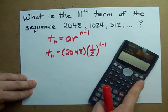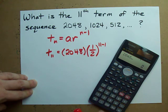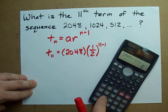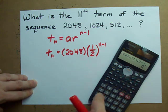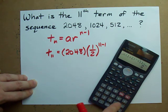So whip out the calculator, you get 2048 times one half to the power of, I'm going to put my exponent in brackets, 11 minus 1.